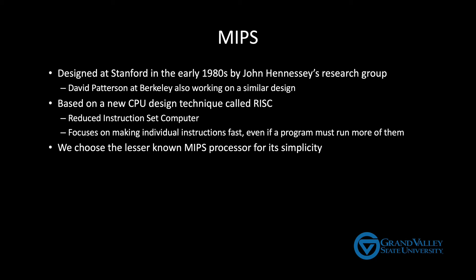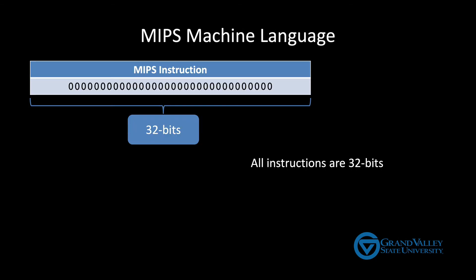Let's look at the details of MIPS machine language. First, every instruction is exactly 32 bits long. Thus, we say MIPS has a fixed width instruction set. Now it may seem obvious that all instructions should be the same length, but some CPUs including x86-based CPUs are variable width. Some instructions are longer than others. So there's your first peek at how machine languages can differ.